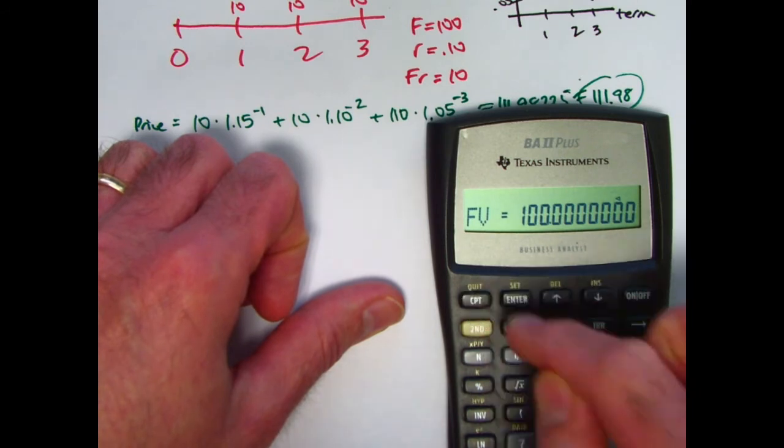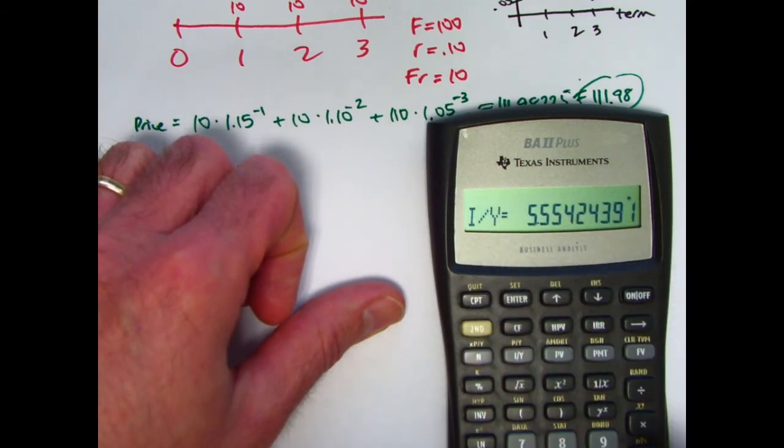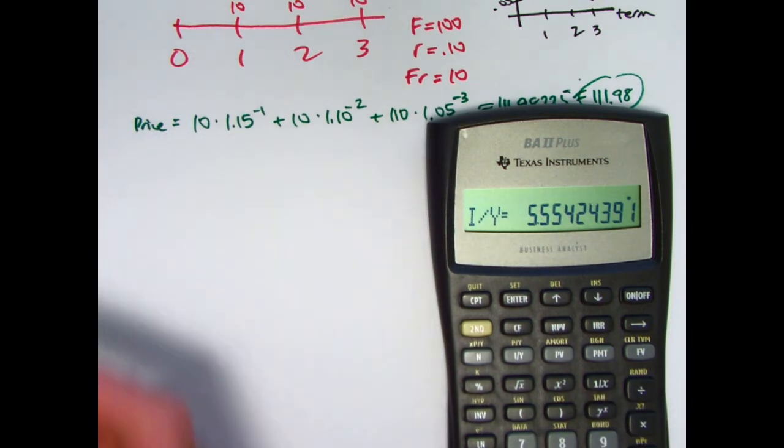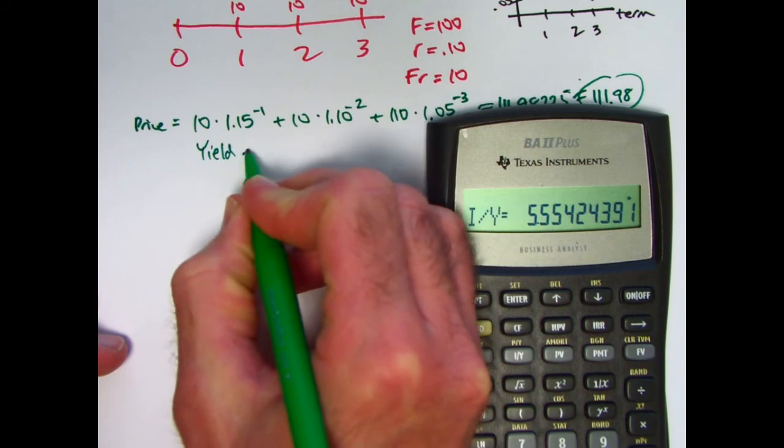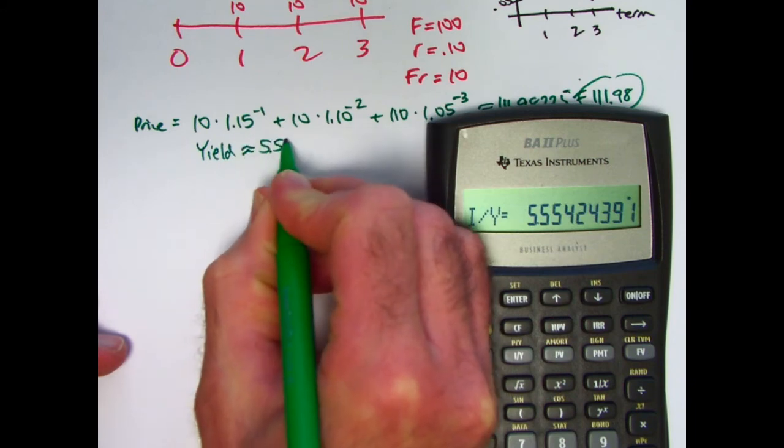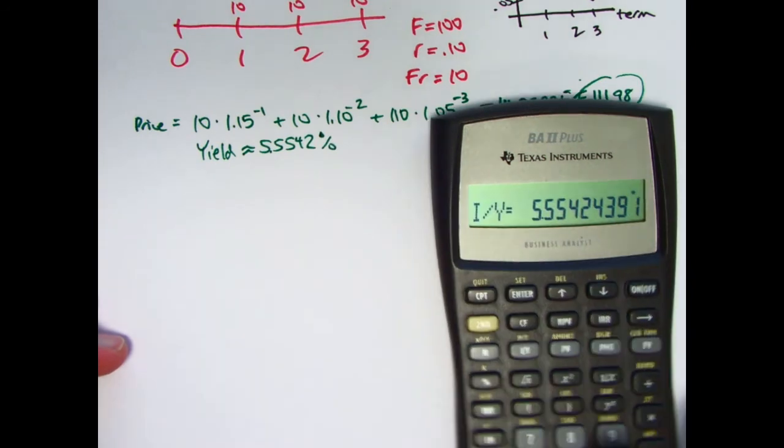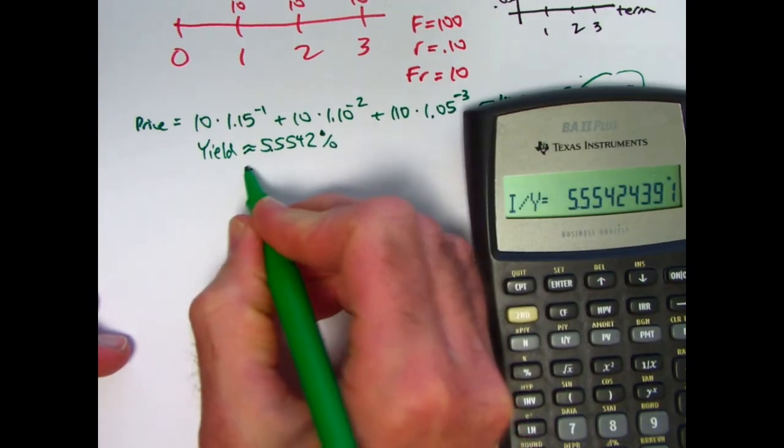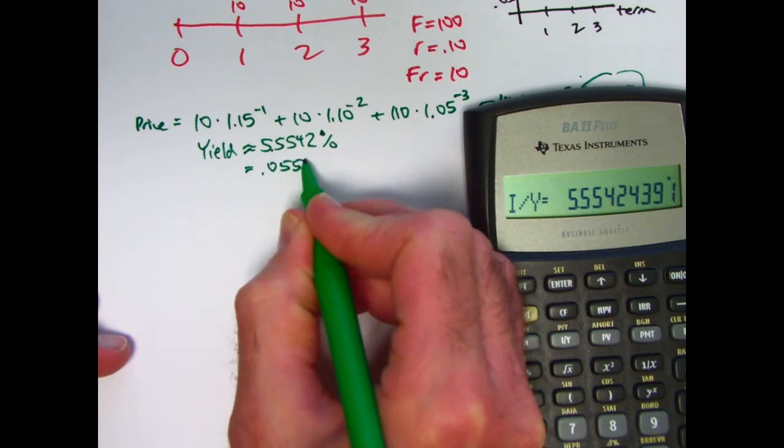So now we can do CPT, I/Y, compute interest per year, about a yield of 5.5542%. The yield is approximately 5.5542%. This is assumed to be with a percent sign as a default. As a decimal without a percent sign, that would be 0.055542.